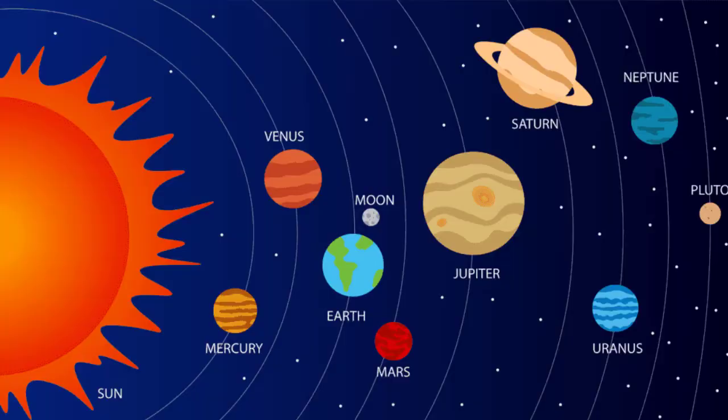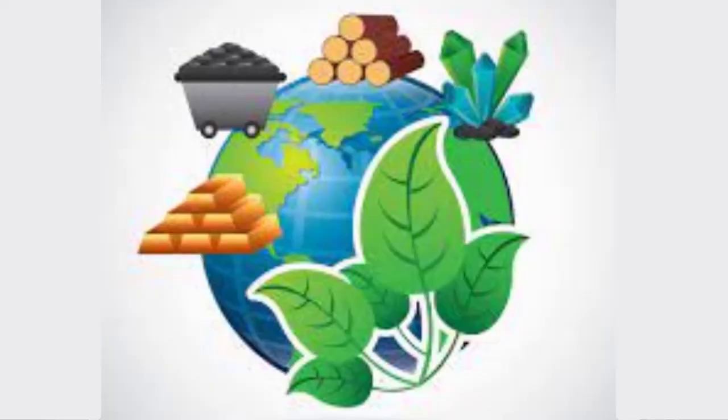Hello students. Have you ever wondered why the Earth is the only planet in our solar system that supports life? It is an ideal distance from the sun where life forms can survive. But these life forms need some more resources to survive, and those resources are called natural resources. Let's study more about natural resources.